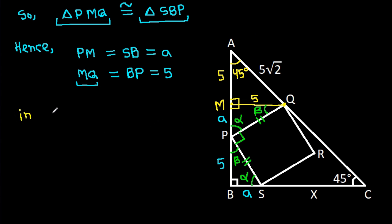And now in triangle ABC, these two angles are equal, that is 45 degrees, that means AB will be equal to BC. And AB is 5 plus a plus 5, and BC is a plus x.